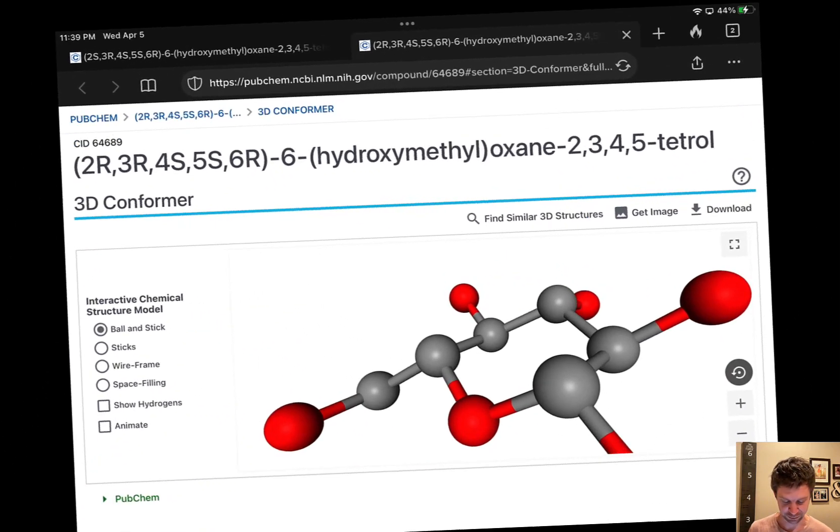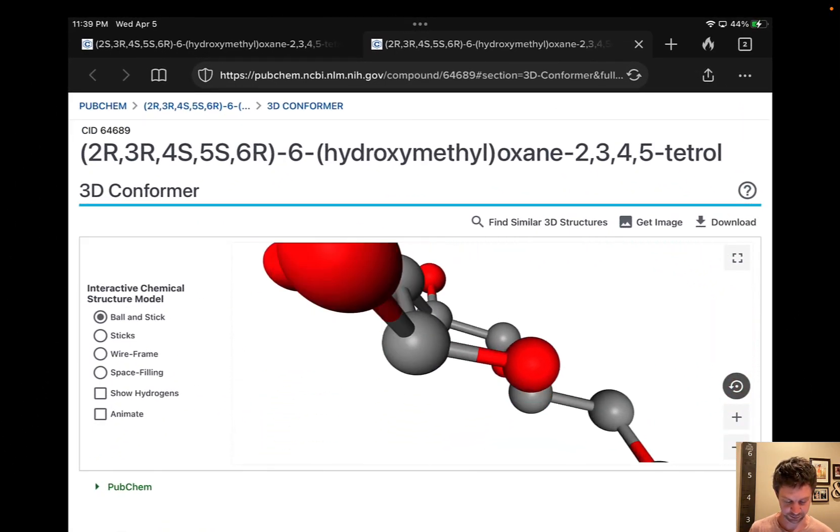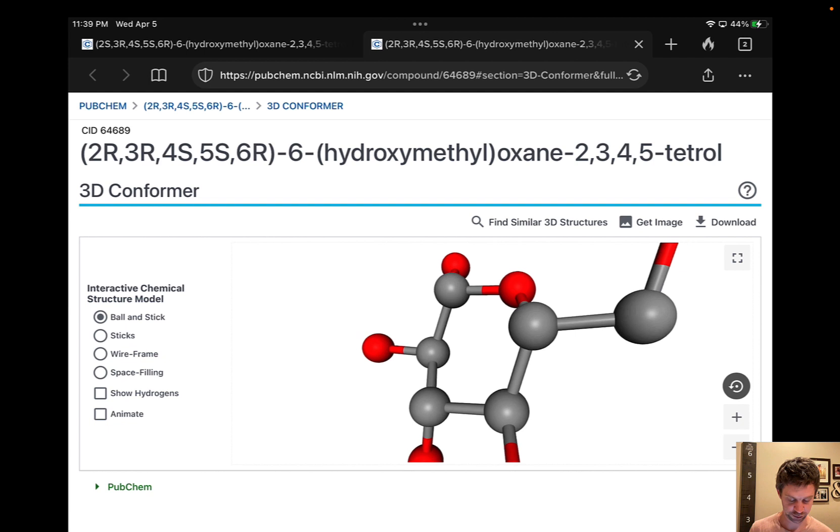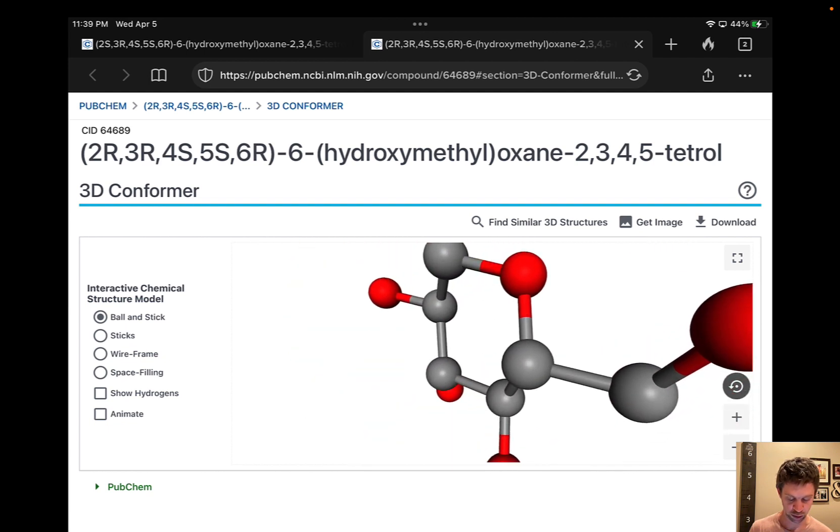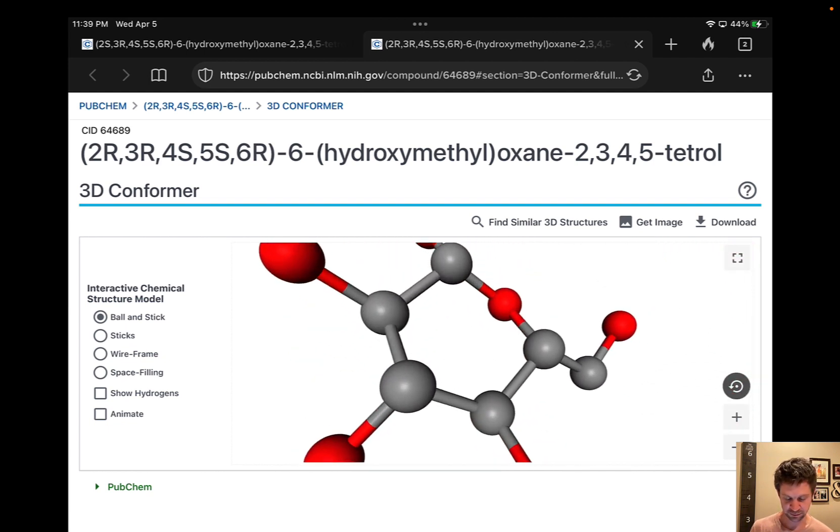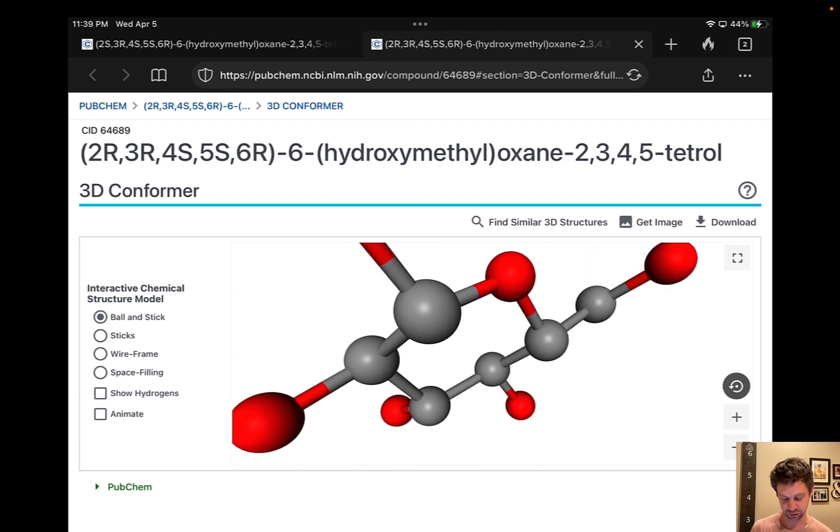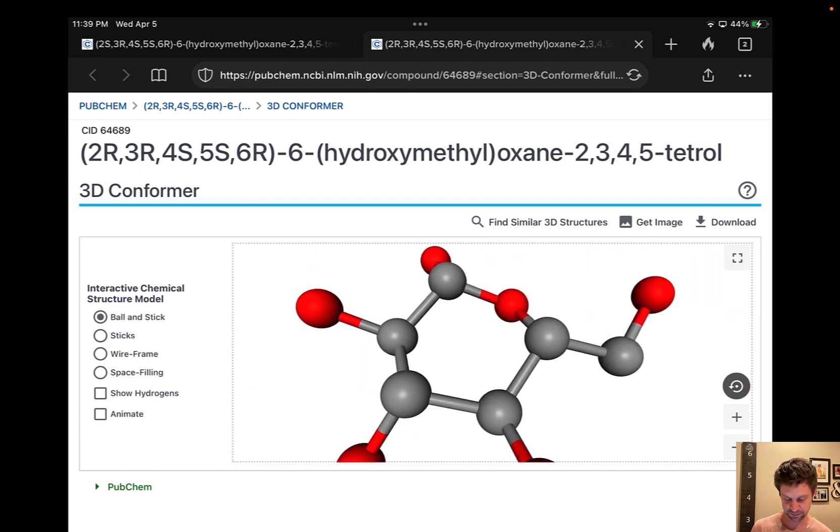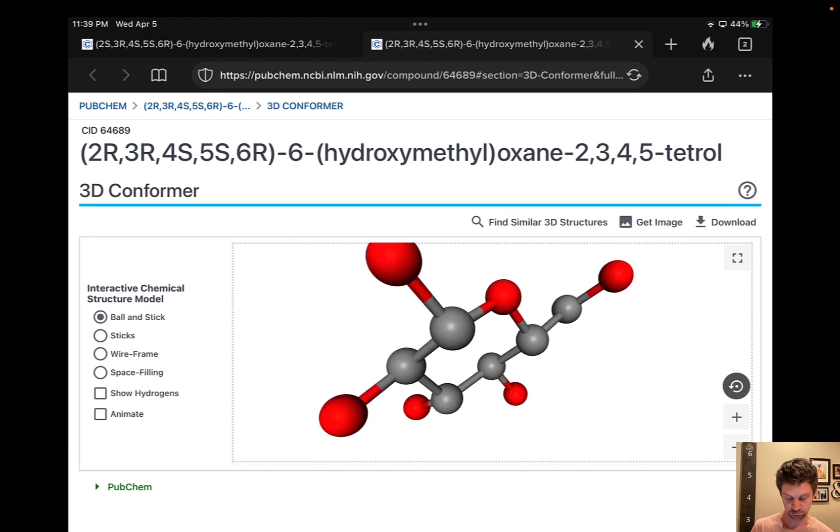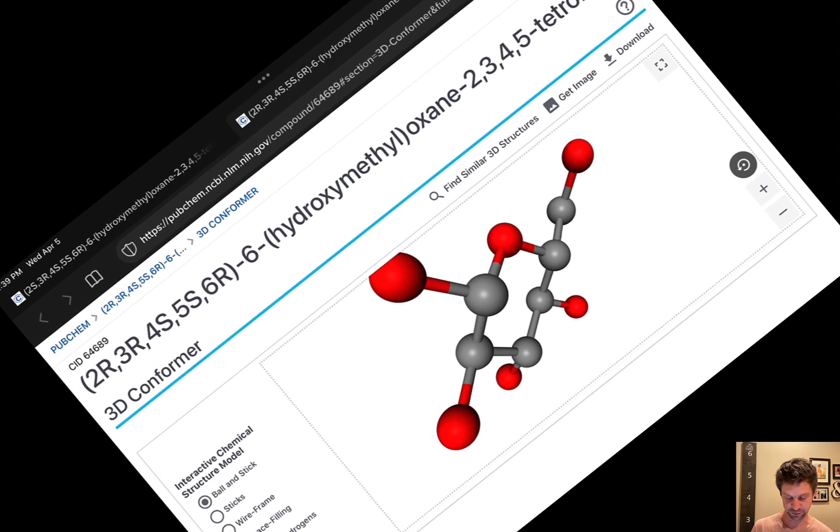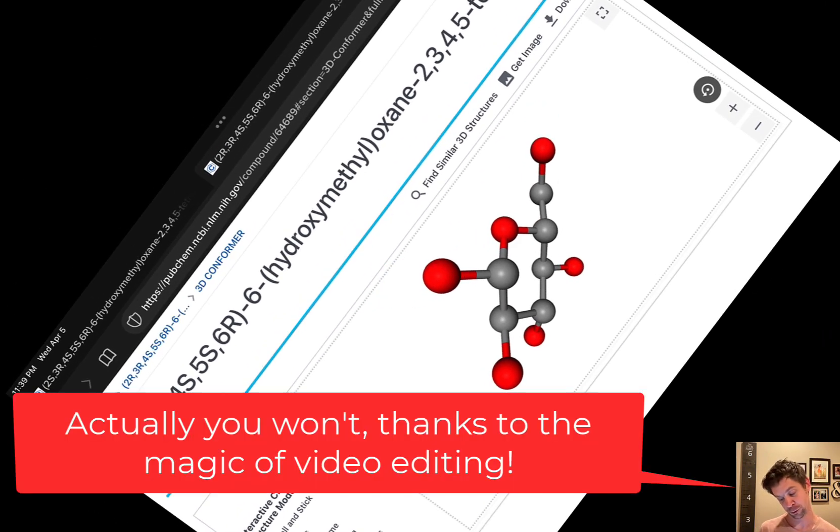Now let's see what's going on at the anomeric carbon, the hemiacetal carbon, the one carbon in this structure that is bonded to two oxygens. And again, by convention, we're going to put that cyclizing oxygen at the top of our field of vision. And we're going to put carbon-2 at the bottom of our field of vision. So here again, you're going to kind of have to rotate your head a little bit here.